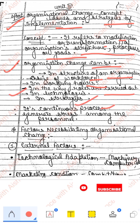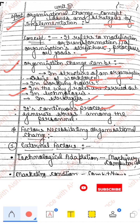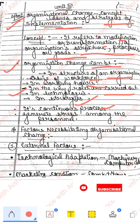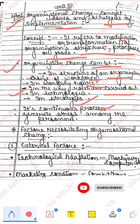Ye ek continuous process hai — jahan pe aap kaam karthi ho, chahe school mein padhate ho, chahe koi job karthi ho, chahe bank mein job karthi ho — kuch na kuch changes aate rehte hain. Kyunki day by day policies change ho rahe hain, laws change ho rahe hain, government change ho rahi hai har 5 saal mein, kuch na kuch naya change aata hi aata hai, toh organization ko use accordingly change karna padta hai.